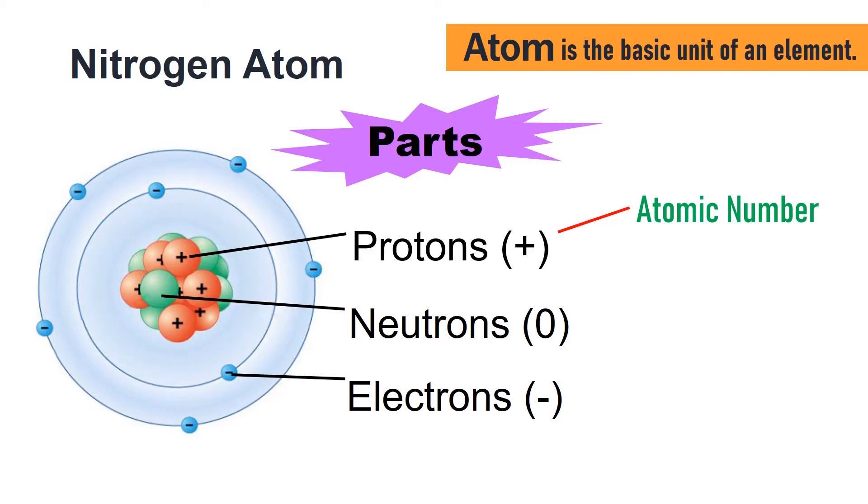Let us count the protons of nitrogen. One, two, three, four, five, six, and seven. The number of protons of nitrogen is seven. So, seven is the atomic number of nitrogen.